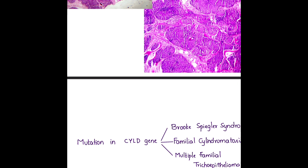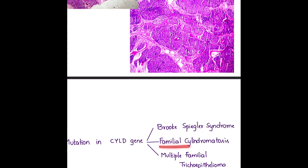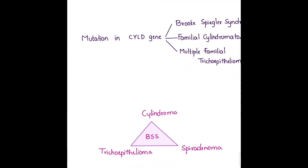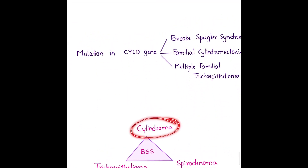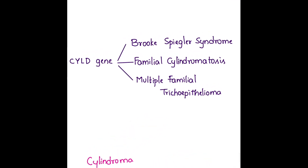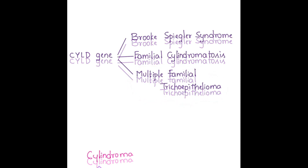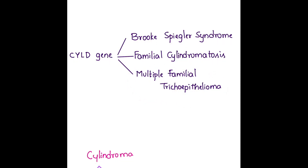Mutation in the CYLD gene occurs in three conditions: Brooks-Spiegler syndrome, familial cylindromatosis, and multiple familial trichoepithelioma. Brooks-Spiegler syndrome is an entity that contains cylindromas, trichoepitheliomas, and spiradenomas, whereas familial cylindromatosis is a condition wherein only cylindromas are seen. Multiple familial trichoepithelioma contains only trichoepitheliomas.